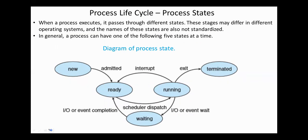Next, process state or process lifecycle. When a process executes, it passes through different states. These stages and their names differ from one operating system to another. In general, the process can have one of the following five states at a time: new, ready, running, waiting, terminated.